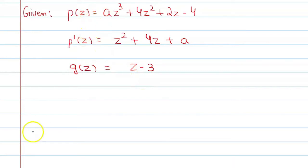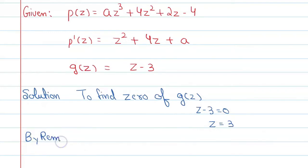Let's start the solution. To find zero of g(z), put z - 3 equal to 0, so z is equal to 3. Now, by remainder theorem, we can say p(3) is equal to p'(3).